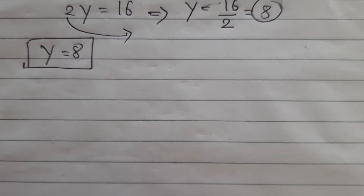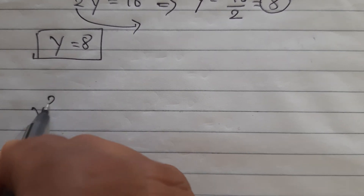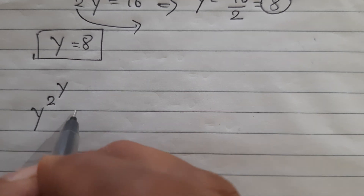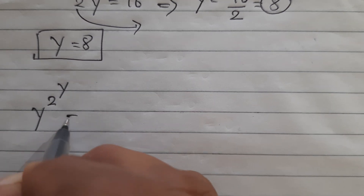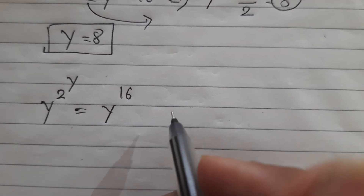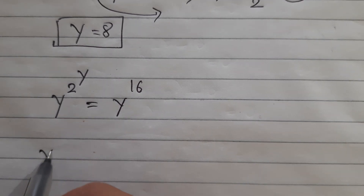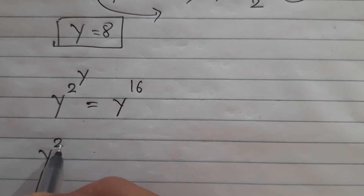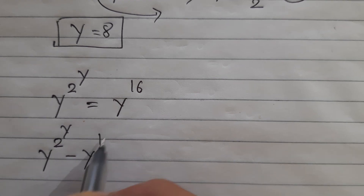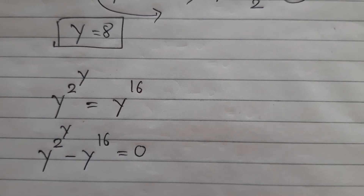Now let's solve it another way. The original problem statement is y to the power of 2 to the power of y equals y to the 16. We take y to the 16 to the left hand side, giving us y to the power 2 to the power of y minus y to the 16, equal to 0.